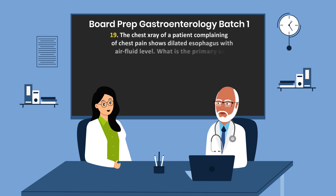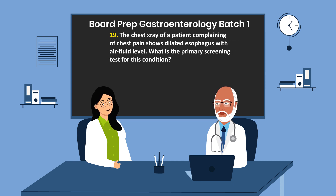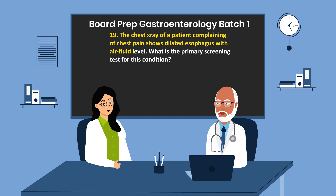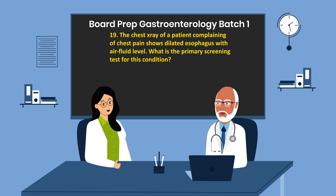Question 19. The chest X-ray of a patient complaining of chest pain shows a dilated esophagus with an air-fluid level. What is the primary screening test for this condition? Barium swallow.